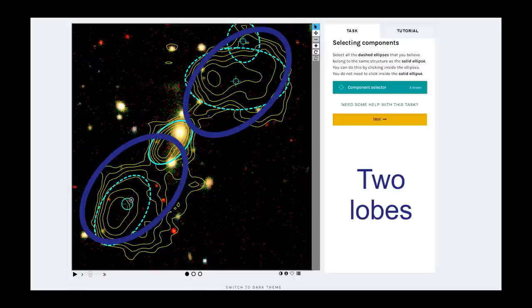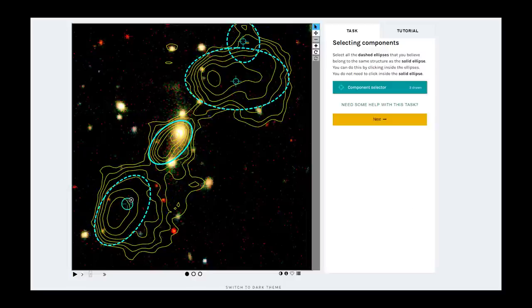The typical shape of the structure that you are looking for is two adjacent lobes, like in this example image. These lobes are formed by the radio jets emitted from a central supermassive black hole. The tutorial workflow will show you more common examples. You can also see the field guide on the right of the screen for more examples of structures that you may be looking for. In this case, all the dashed ellipses are part of the two lobes structure. Click on all of them to associate them together. Once you are done with this task, you can move on to the second task by clicking the next button.